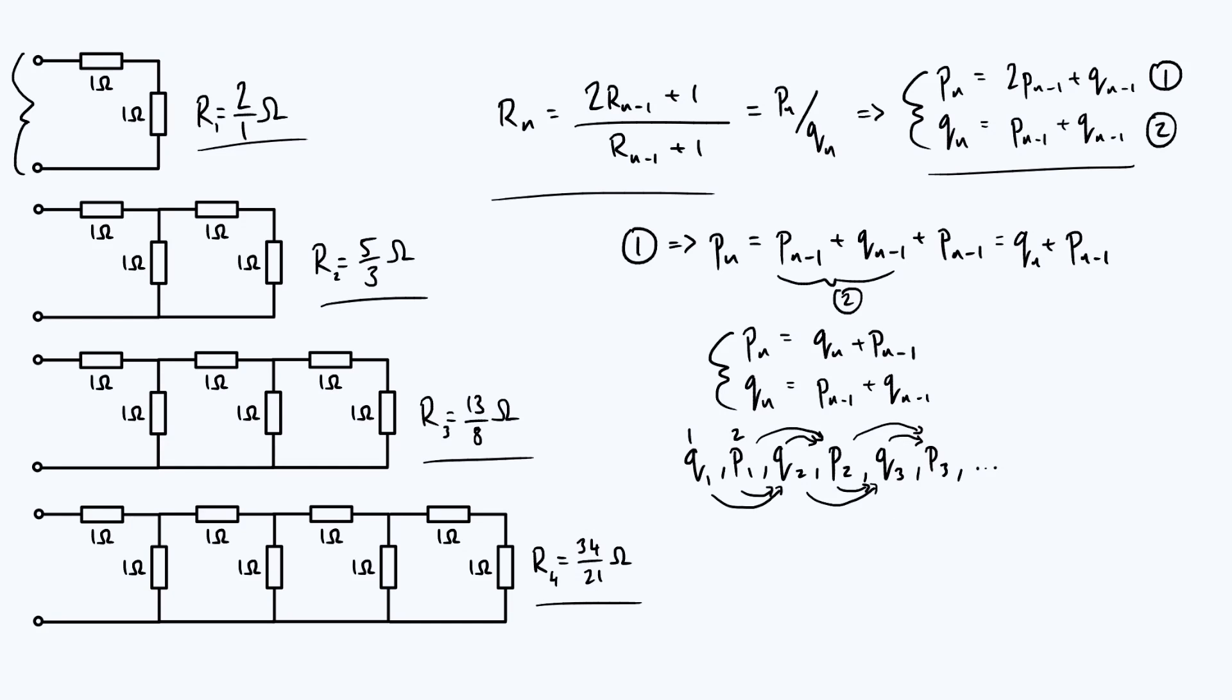Now when you write the sequence out like this, it becomes very clear that the rule to get to any given term is that you just add together the previous two terms, and that specifies all of the terms as long as you give the values of Q1 and P1, the first two terms in the sequence. So you need to specify this one and this two in order to calculate all of the subsequent terms.